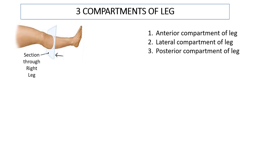Hello and namaskaram everyone. Together let's try to understand the boundaries of the anterior compartment of the leg. The leg is a region of the lower limb between the knee joint and the ankle joint. Anatomically, the leg is divided into three compartments: the anterior compartment, lateral compartment, and posterior compartment of the leg. Each of these compartments has muscles and neurovascular structures supplying them, and distinct boundaries separating them from one another.